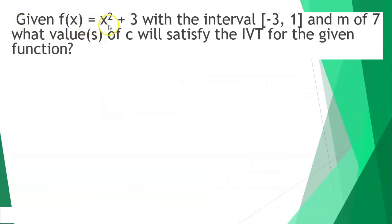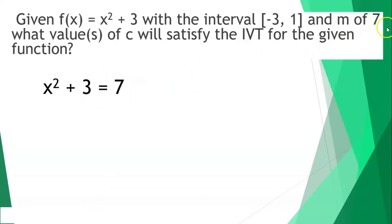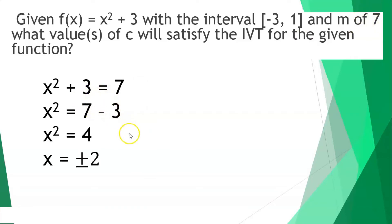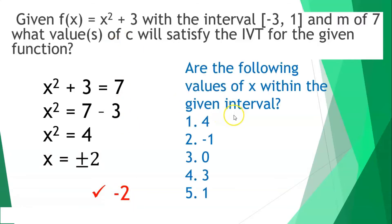Given f of x is equal to x squared plus 3 with the interval from negative 3 to 1 and m of 7, what values of c will satisfy the IVT? Setting x squared plus 3 equal to 7, transferring 3 to the other side, x squared is 4. Getting the square root of both sides, the values for x are positive and negative 2. Since the specified interval is negative 3 until positive 1, we will only consider negative 2 as a solution.